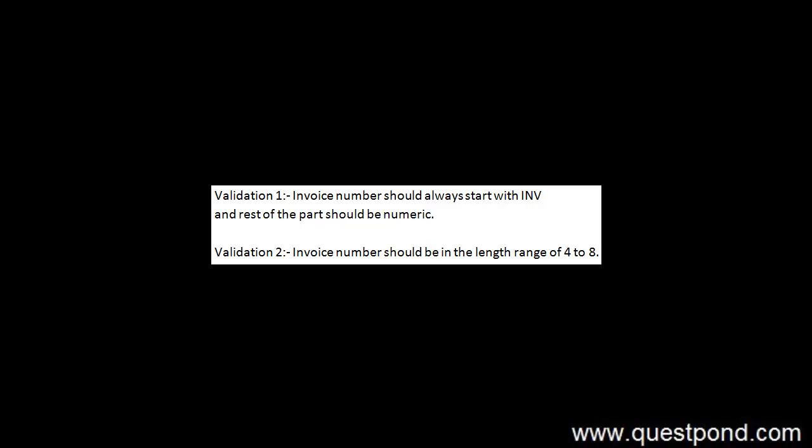Let's take a simple example. Let's say we want to generate test data for invoice numbers, so we have an invoicing application. There are two validations or restrictions on the way the invoice number data should be generated. First, the invoice number data should always start with INV. The rest of the invoice number will be numeric — for example, INV1001 or INV2003.